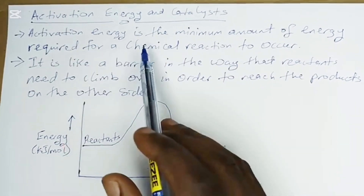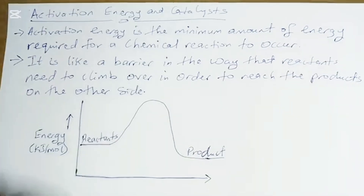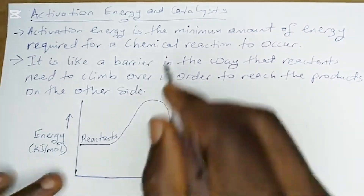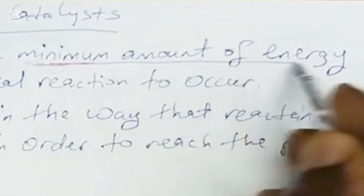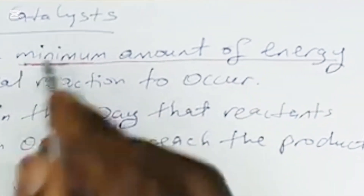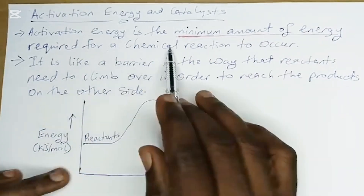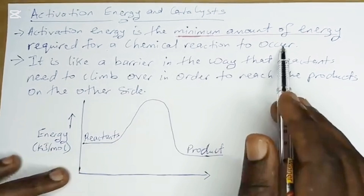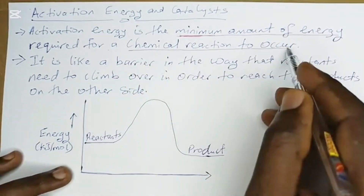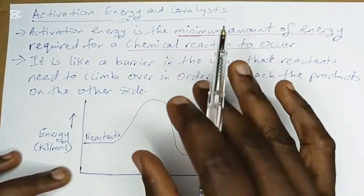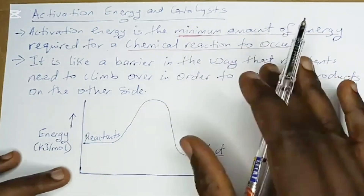What is activation energy? Activation energy is the minimum amount of energy required for a chemical reaction to occur. It means before a chemical reaction can occur, there is an energy needed to make it happen.